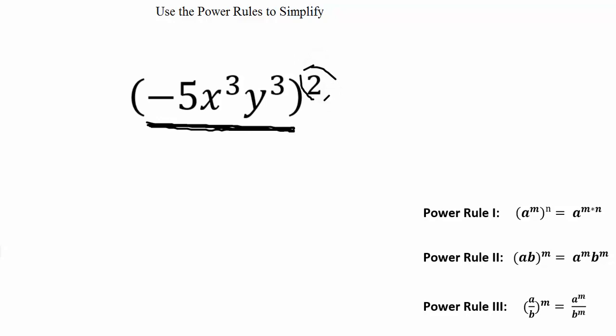That exponent goes to every factor inside our parentheses. The squared goes to the negative 5, to the x³, and to the y³. Let's show that.